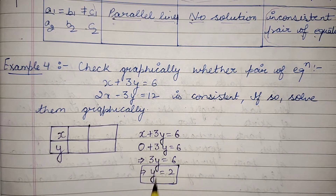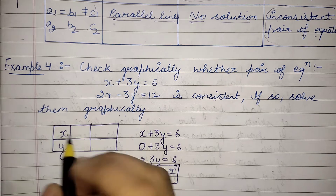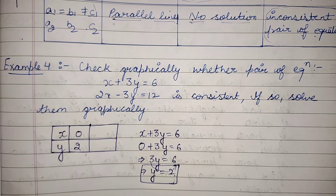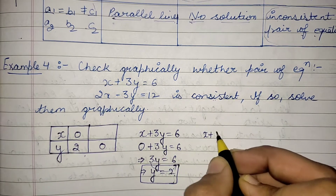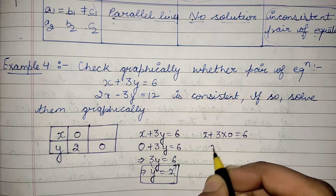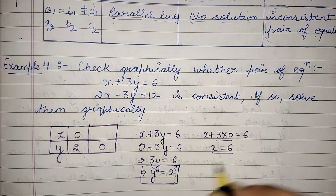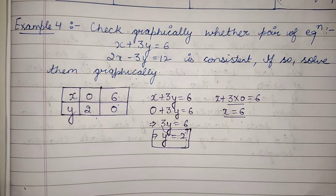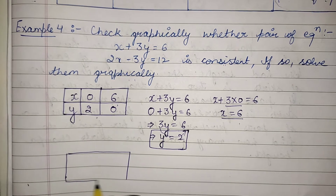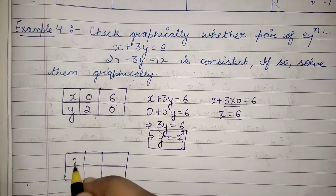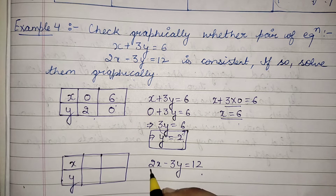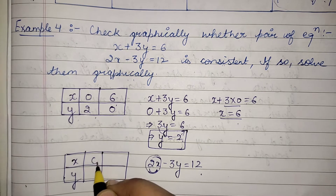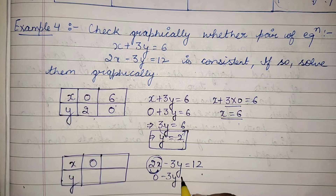So when x = 0, y = 2. If y = 0, then x = 6. Similarly, for the second equation 2x − 3y = 12: if x = 0, then −3y = 12, so y = −4.